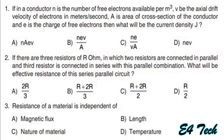Current density: current is equal to i = n × e × a × v, where n is number of electrons, e is charge, v is drift velocity, and a is area. Current density is not current — it is current divided by area. So current density = n × e × v × a divided by a = n × e × v. Option D: nev.